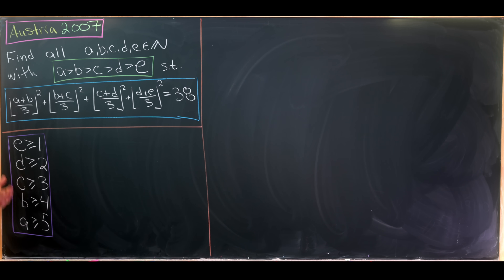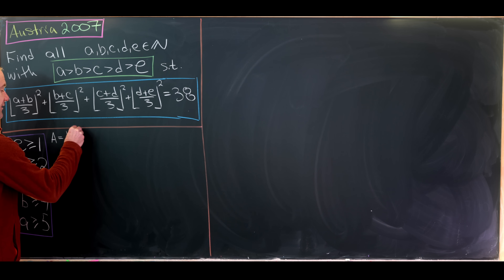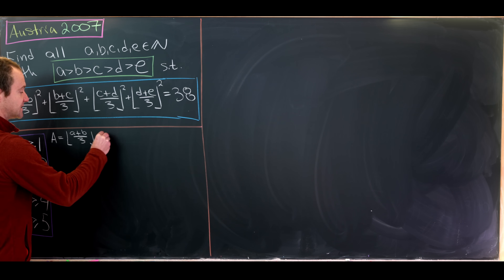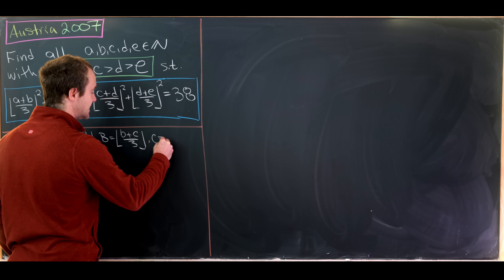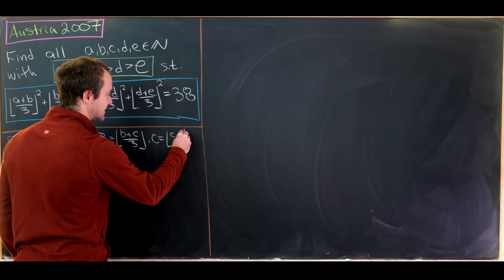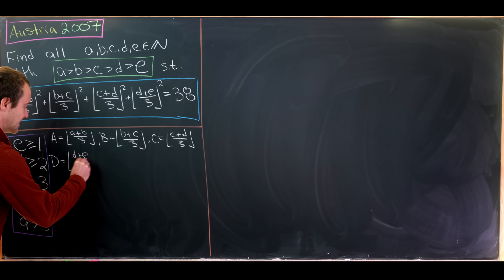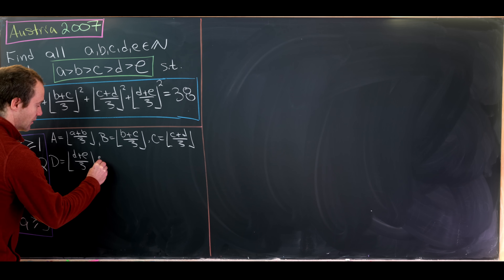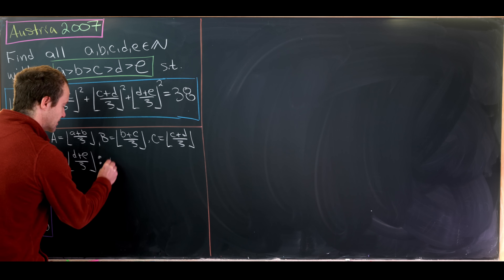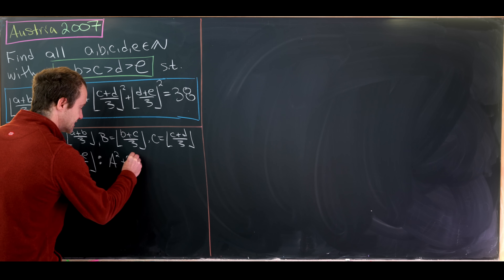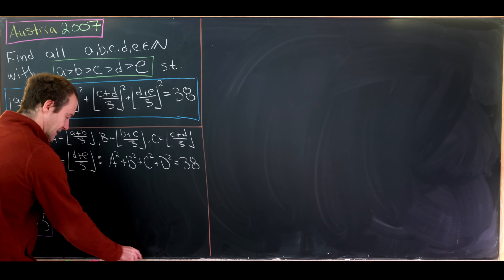Next I'm going to introduce some new notation. I'll set capital A equal to the floor of (A+B)/3, capital B equal to the floor of (B+C)/3, capital C equal to the floor of (C+D)/3, and capital D equal to the floor of (D+E)/3. Under that renaming, we have the new equation: A² + B² + C² + D² = 38.